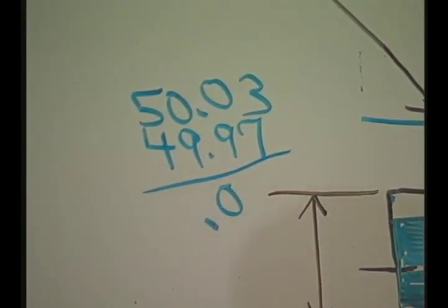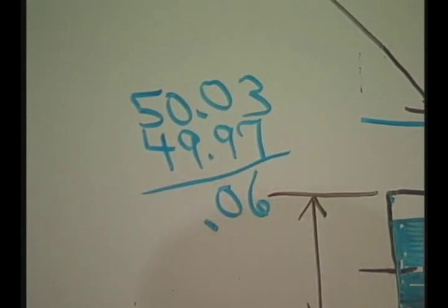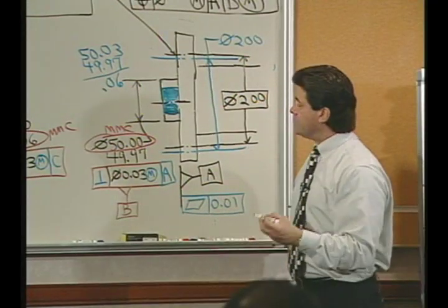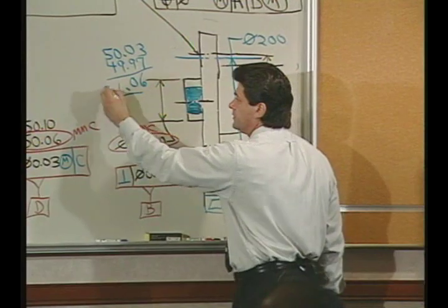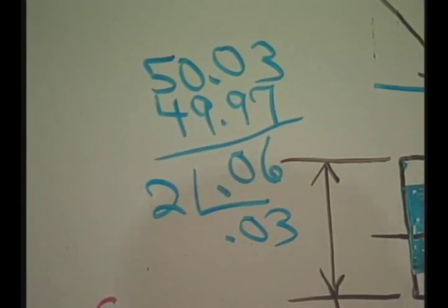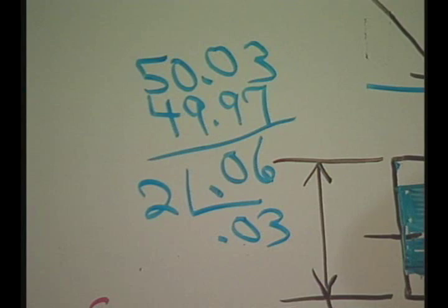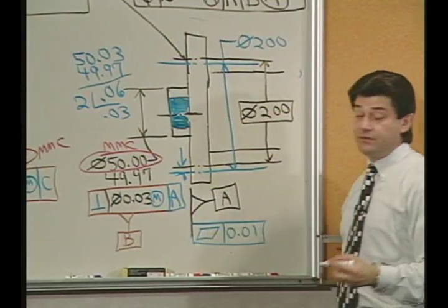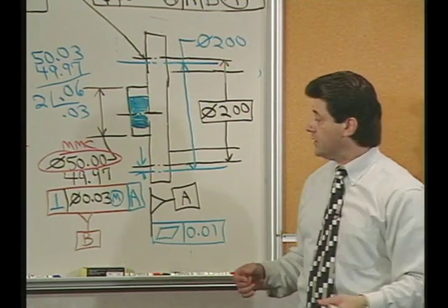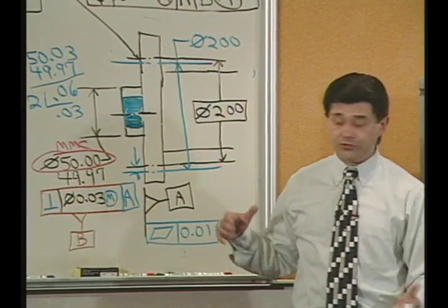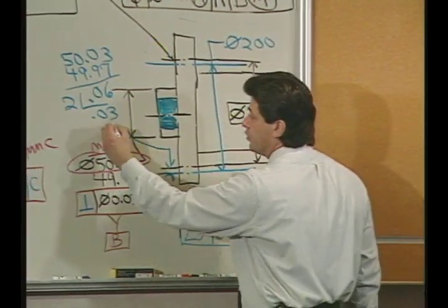And the difference between those two things is 0.06. And if you divide that by two, you get 0.03. So it's possible that we could get a radial shift between the desired location of the bolt circle and the shifted location of the bolt circle that is that 0.03.